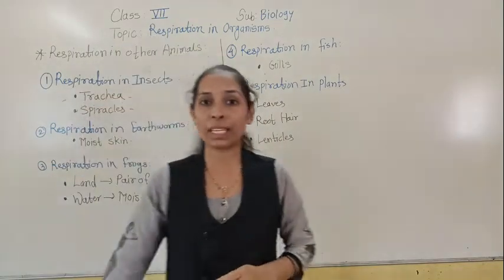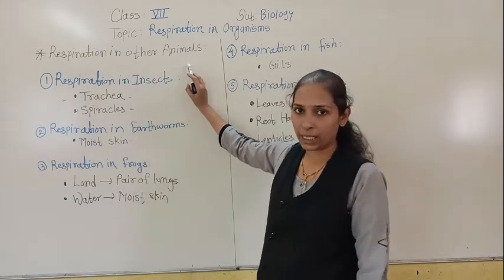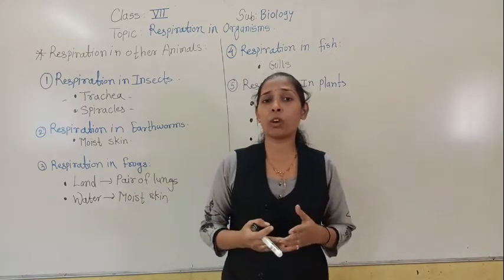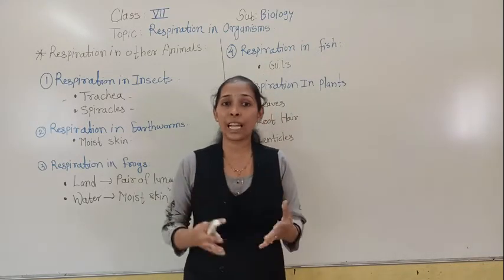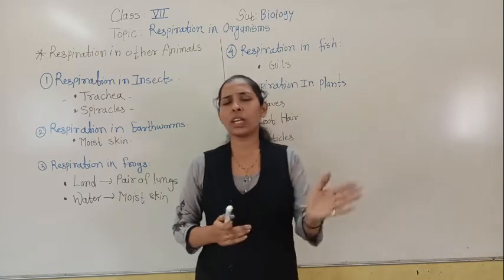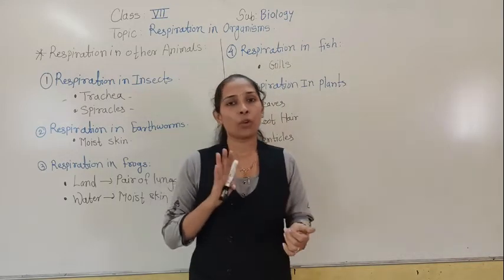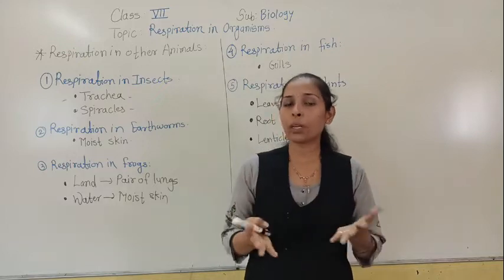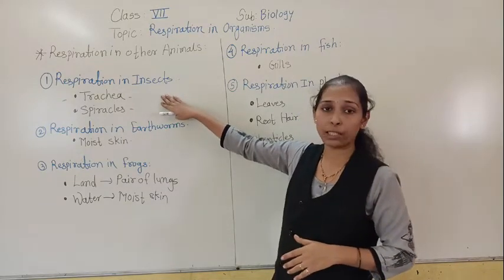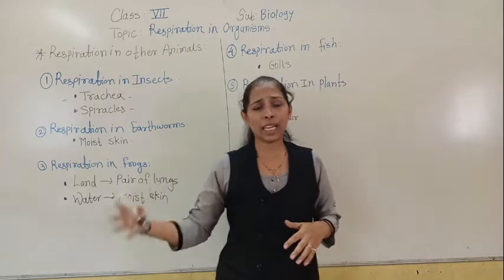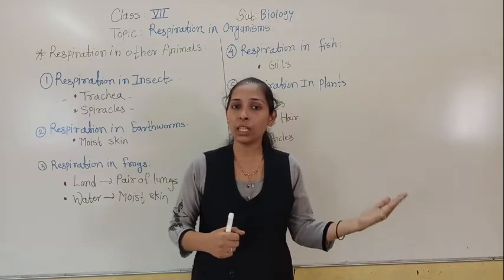Now we will move to the next point from the lesson — the table for respiration in other animals. Till now we have discussed the respiratory system of human beings, but along with humans there are certain animals also doing the process of respiration. Each and every living thing does respiration, whether unicellular or multicellular. According to the animal, their respiratory organs are also different.